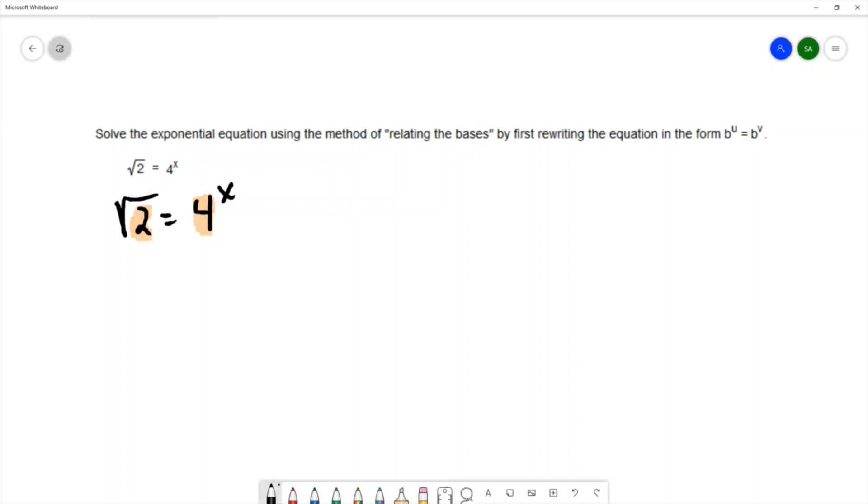So I would write 4 as 2 squared. I would still need that x, I would carry down that x. And I have to remember that when you have radicals, that's the same thing as the one fractional power. So for this example, because it's a square root, it will be 2 to the one half power.